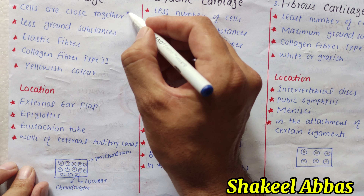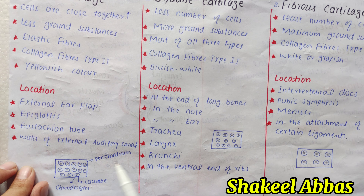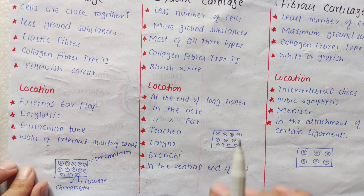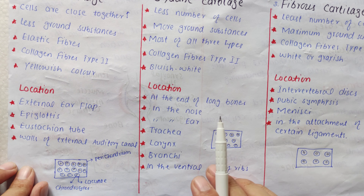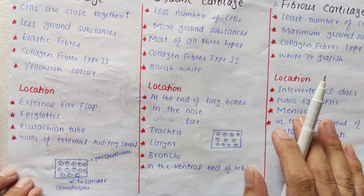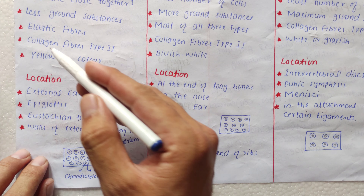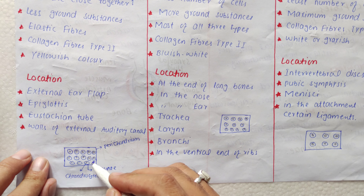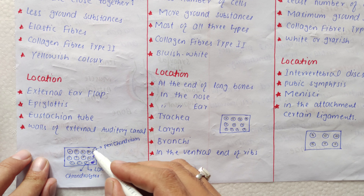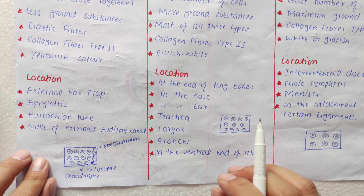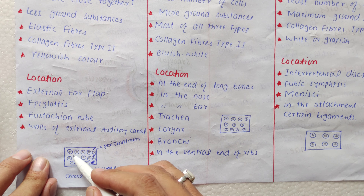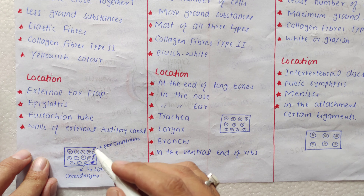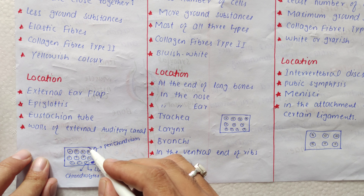چونکہ cells زیادہ ہیں، اس لیے ground substance کے لیے کم space بچتا ہے — کم extracellular space بچتا ہے۔ اس کا مطلب ہے اس میں less ground substances ہیں۔ Ground substances میں پہلے نمبر پر elastic fibers ہیں، اور انہی elastic fibers کی وجہ سے یہ cartilage elastic ہے۔ اس کے علاوہ extracellular space میں collagen type 2 fiber بھی پایا جاتا ہے۔